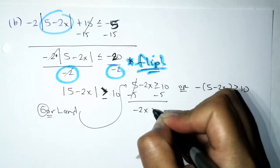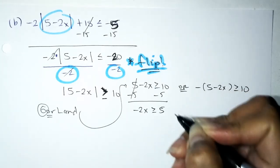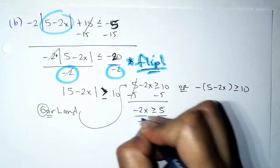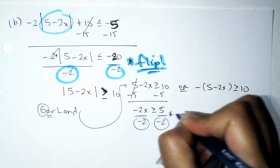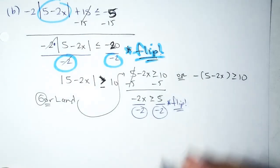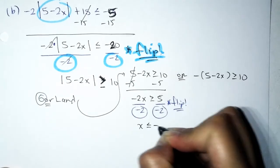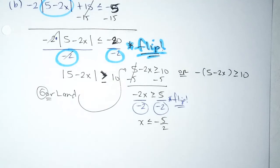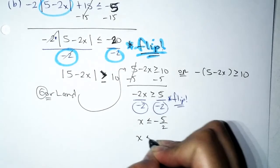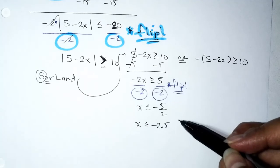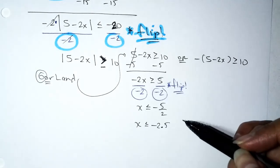First inequality: subtract 5 from both sides to get −2x ≥ 5. Divide both sides by −2 and flip: x ≤ −5/2, which is −2.5. One inequality down.